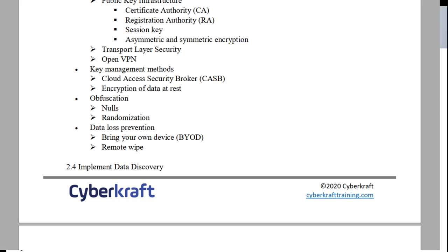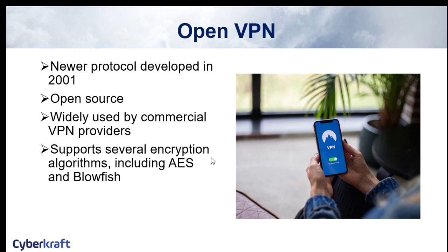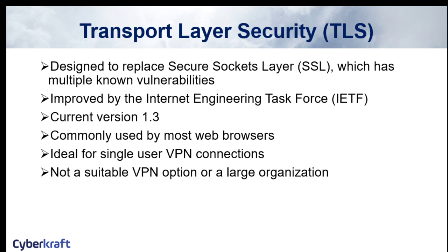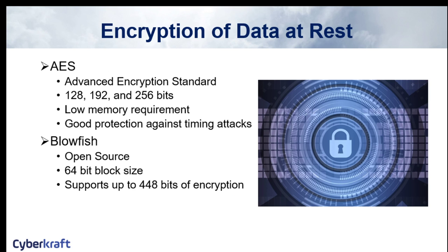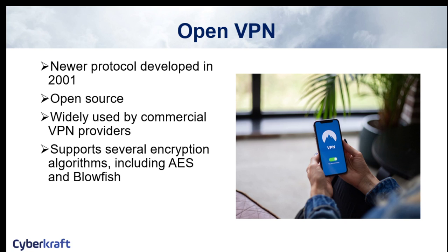Going back to VPNs — there's a newer type called OpenVPN, developed in 2001. OpenVPN is an open-source VPN method that supports different encryption algorithms like AES and Blowfish, as opposed to just transport layer security VPNs. OpenVPN is very good for multiple connections — it's a method for providing an organization with many different VPN options. Just remember OpenVPN as a way to conduct and set up a VPN.